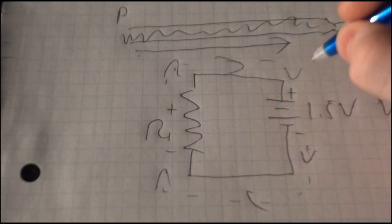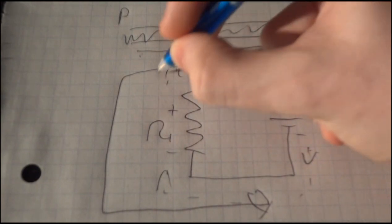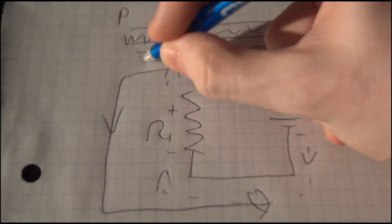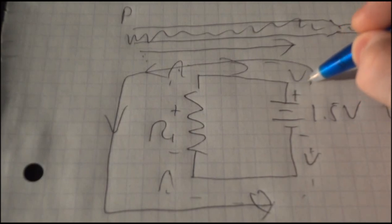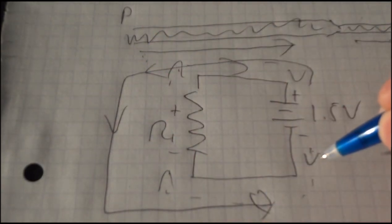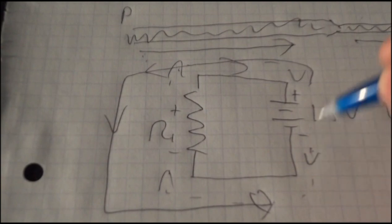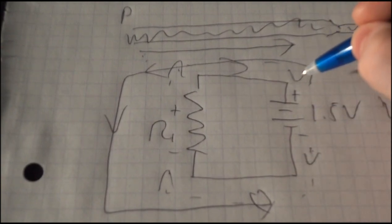They will always go from the negative sign out of your source, through the load, back to the positive. Now in a circuit we generally look at current as flowing this way. So when you're looking at current, current is usually measured from the positive to the negative. So current from positive to negative. If you're looking at the electron flow, you're going from negative to positive.